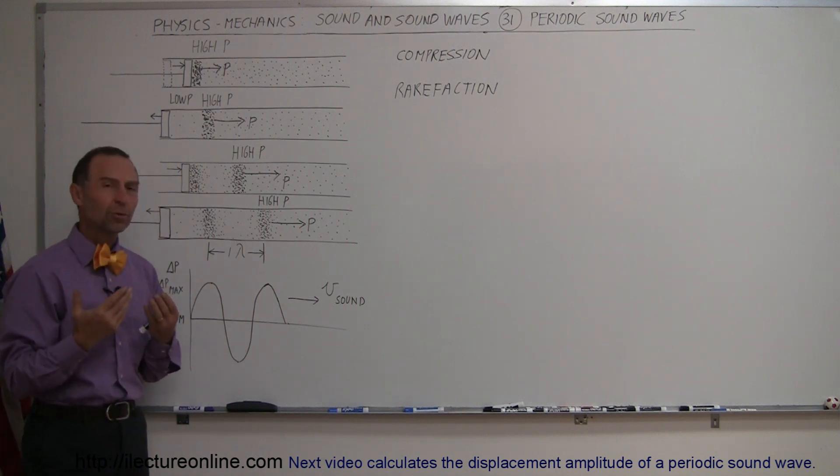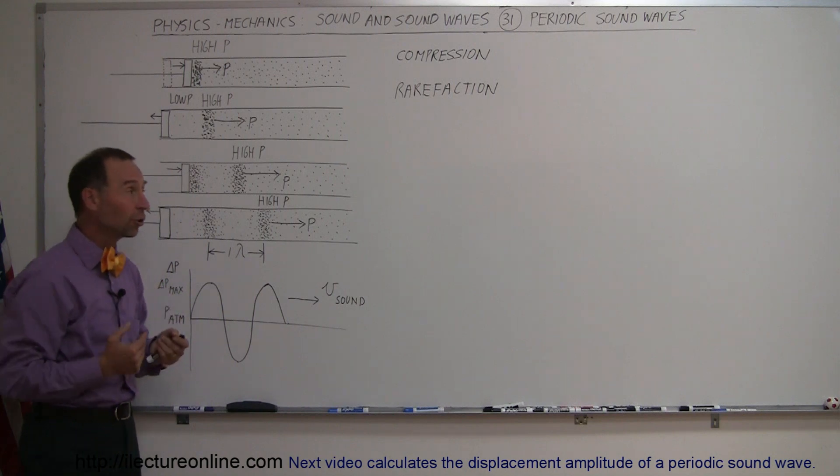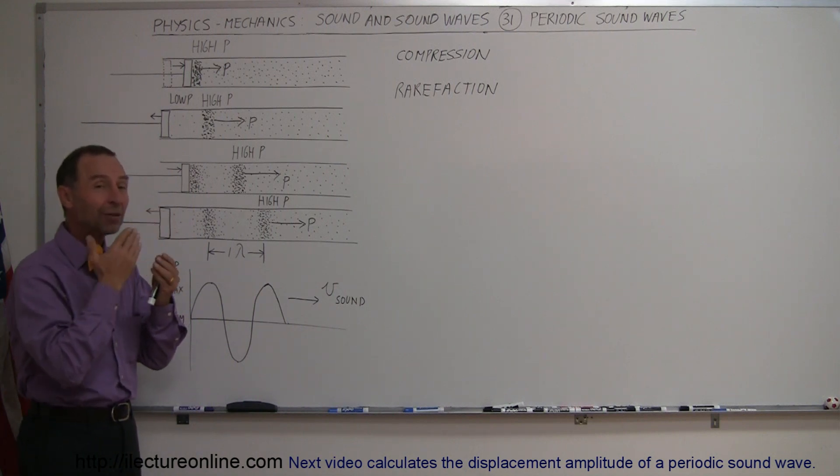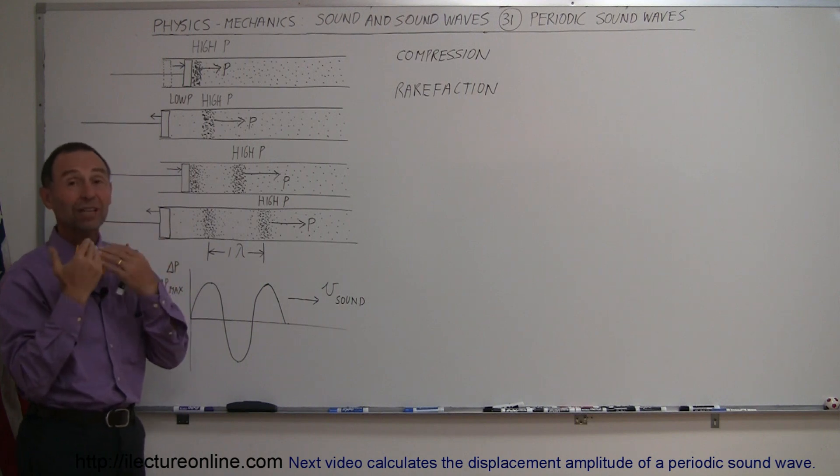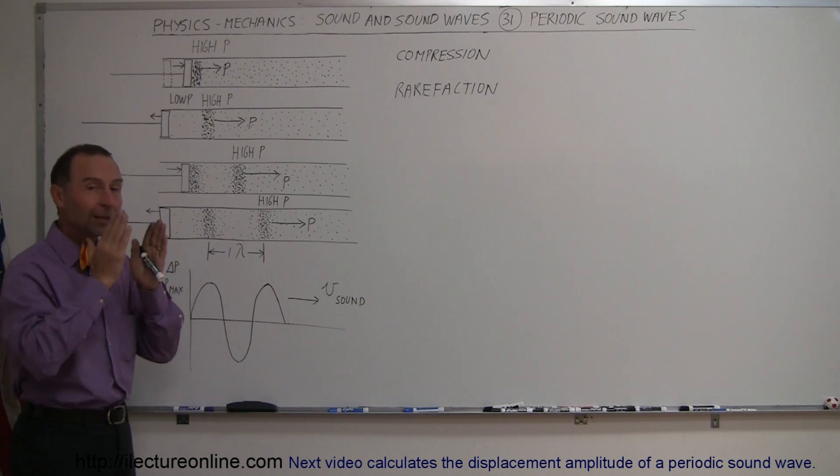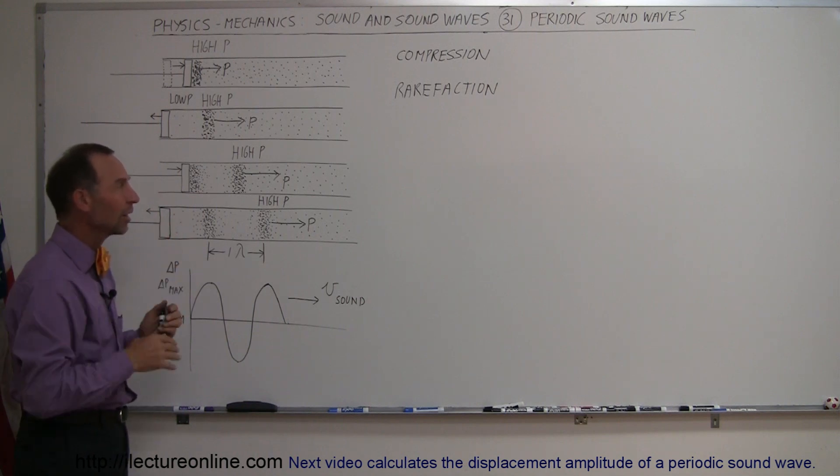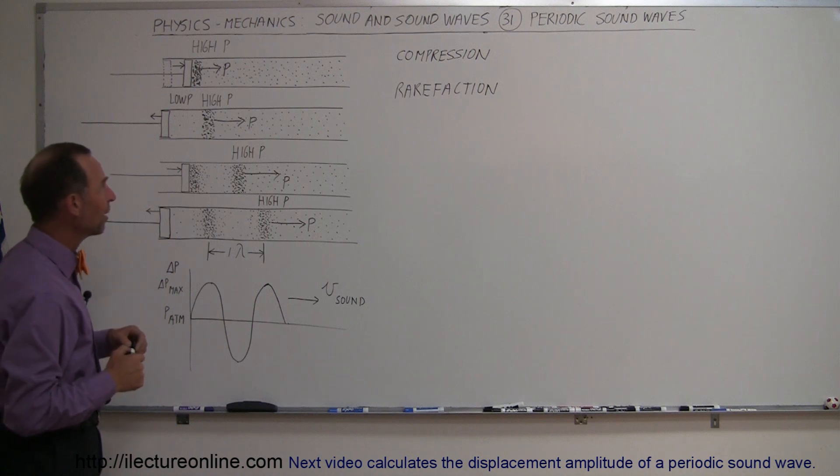Whenever sound waves are produced, like they're being produced right now by my vocal cords, something is vibrating back and forth, pushing against the air in my throat and causing compressions in that air near where my vocal cords are vibrating.